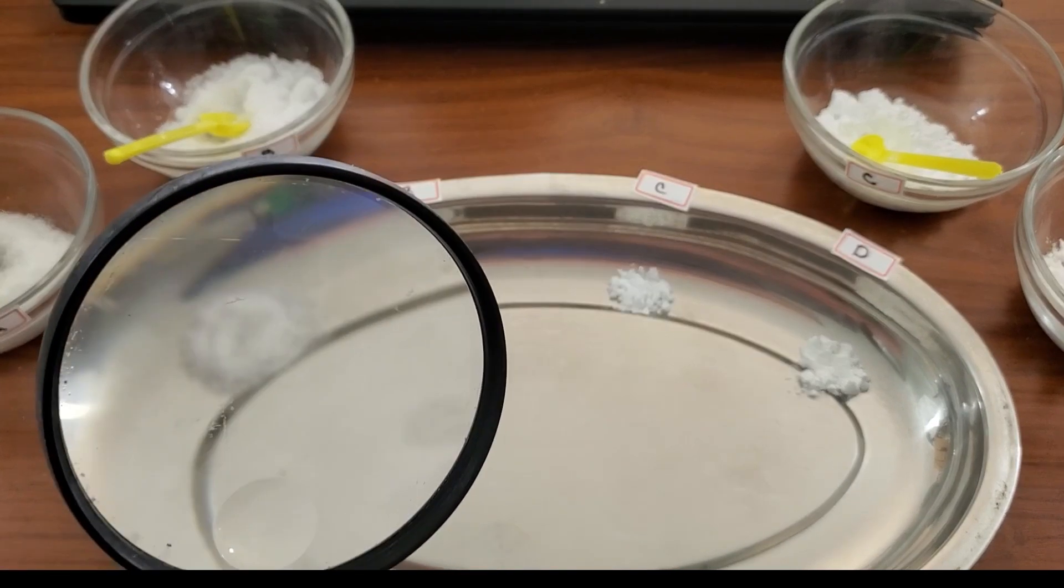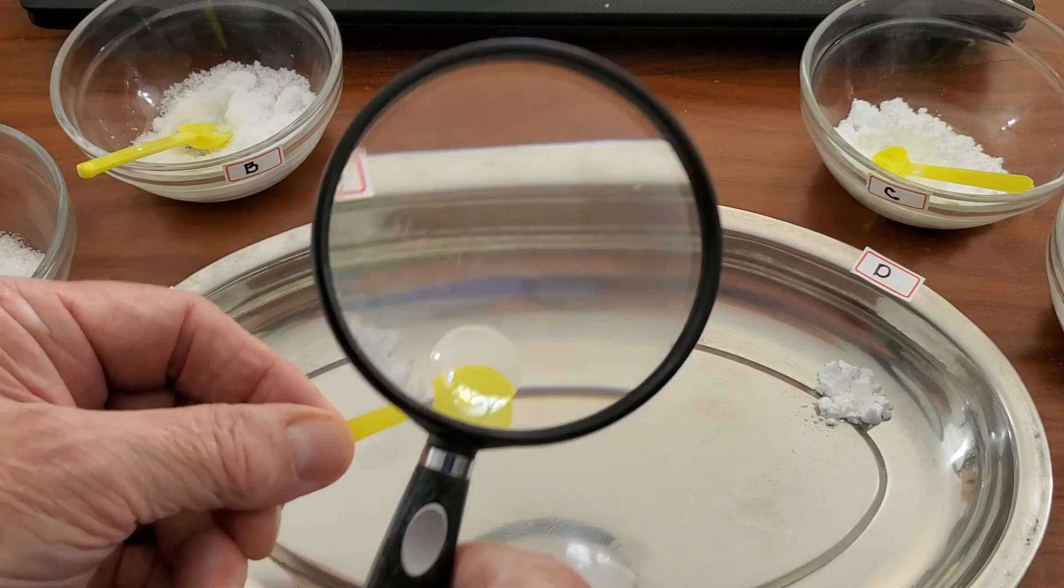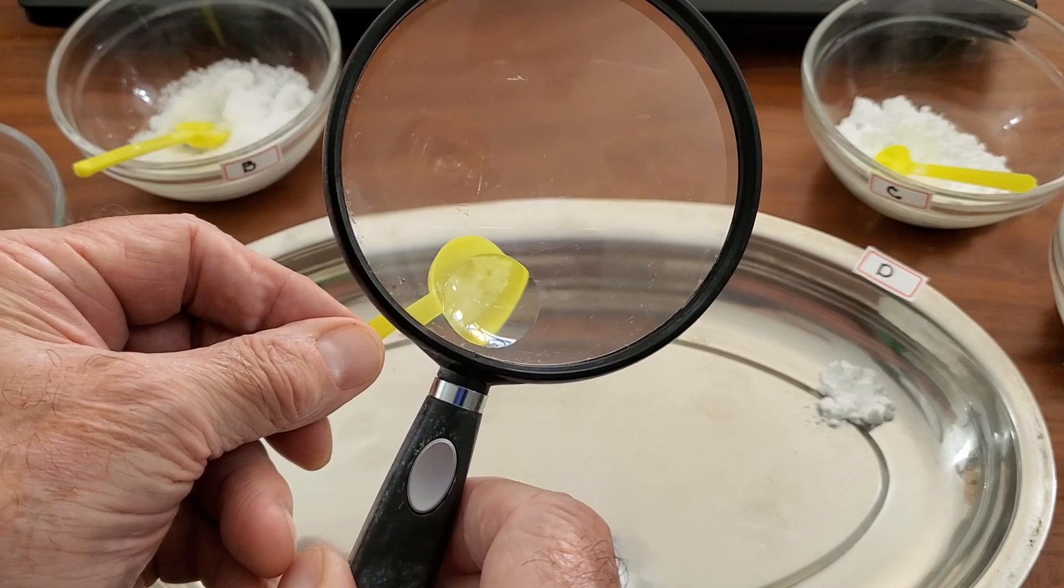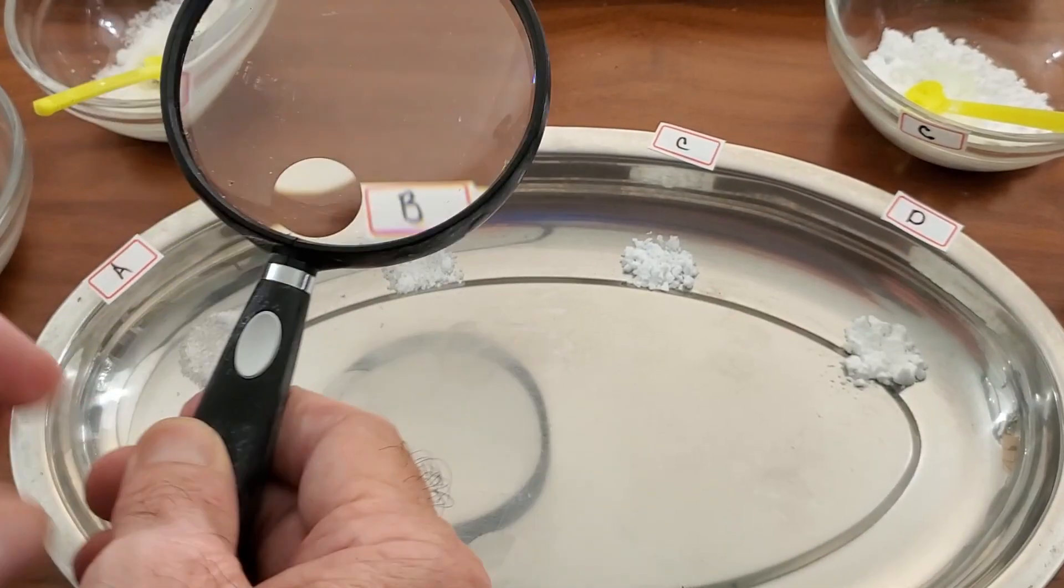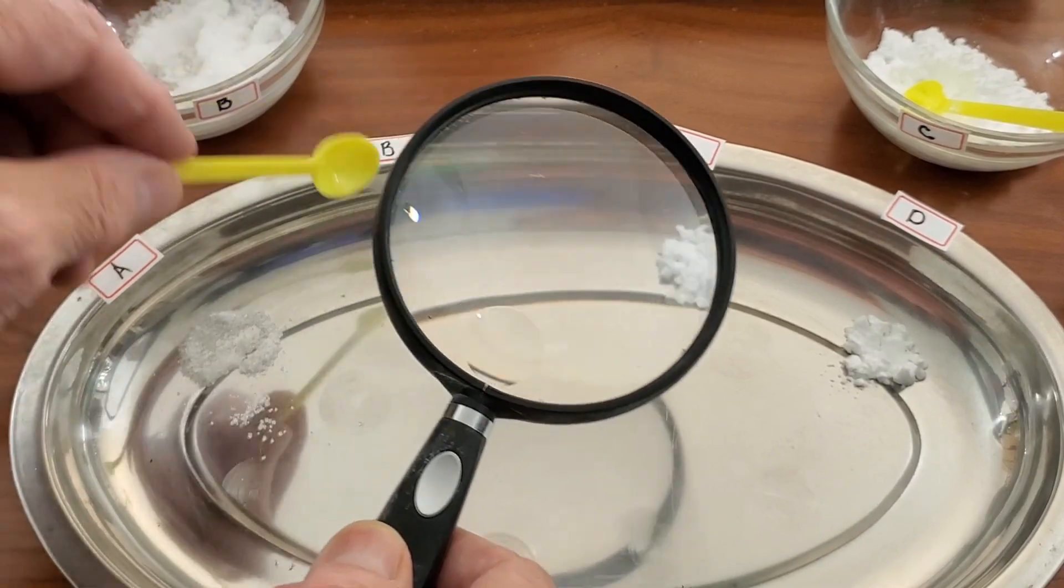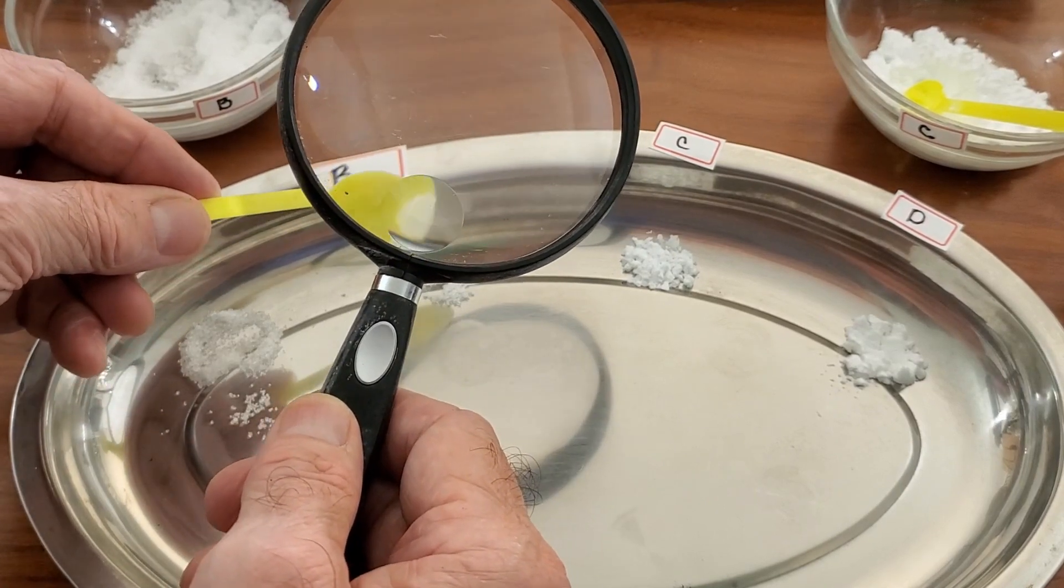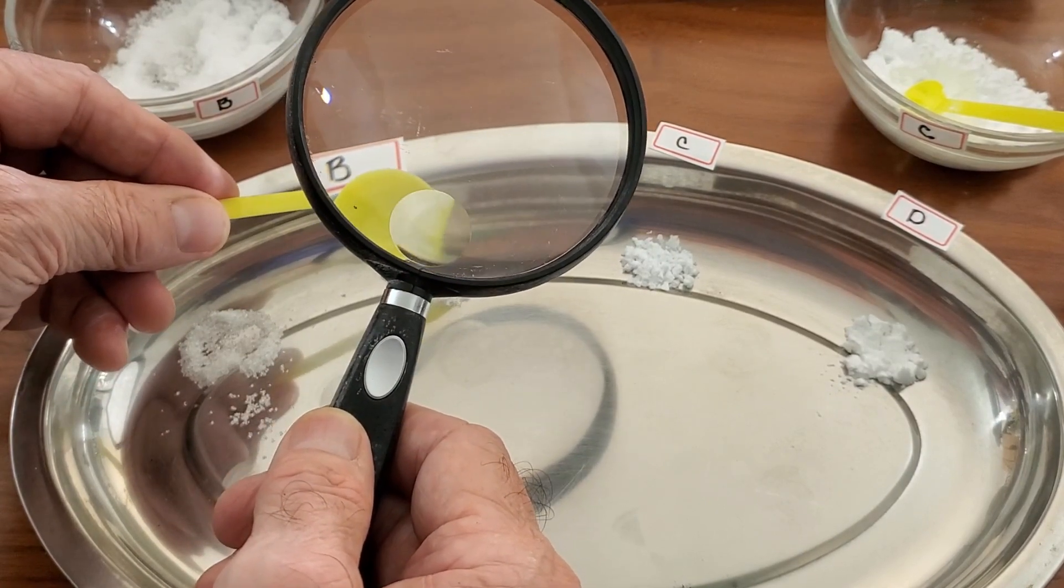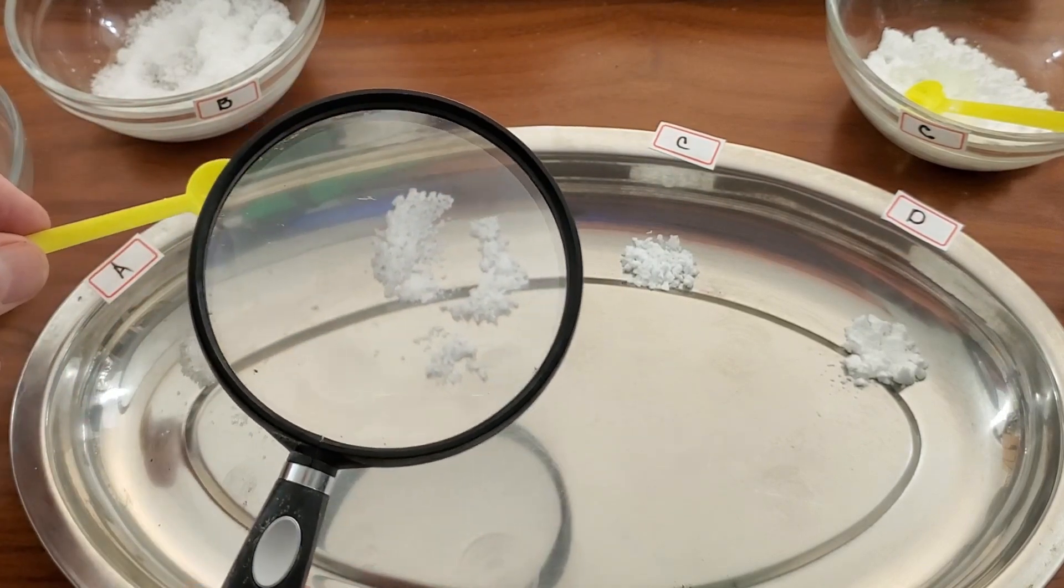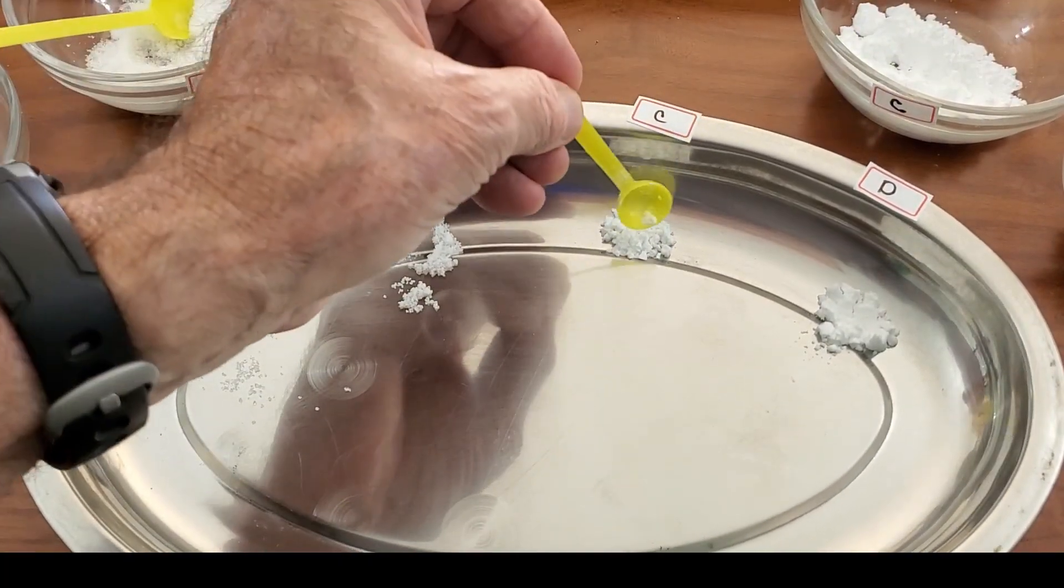And the first test is the looking test. A microscope would be cool, but these hand lenses work fine. And then on a worksheet, we will write what we see, try to draw a picture. The worksheets can be downloaded to record the information on a data sheet.